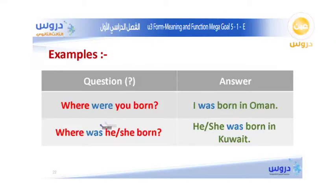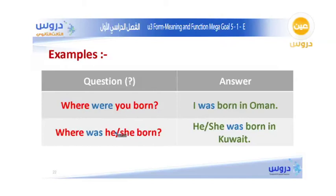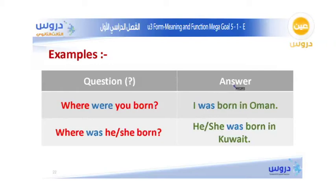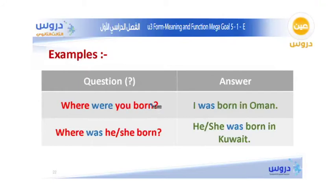The second question uses the past form of the verb to be: Where was he born? 'Was' is the past form for he/she/it, and 'were' is the past form for you/we/they. The answer is: He or she was born in Kuwait. Those are examples of asking about where people were born using the simple past.